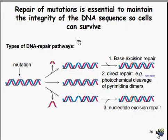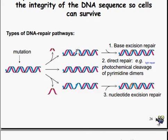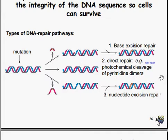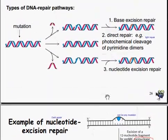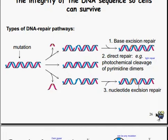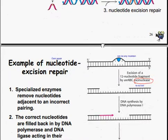The repair of these mutations is essential to maintain the integrity of DNA sequences so cells can survive. The types of DNA repair pathways are: base excision, which removes the incorrect base causing the issue; direct repair (or light repair), which is photochemical cleavage of a pyrimidine dimer — it simply pulls the mutation right out; and nucleotide excision repair, which pulls off the whole nucleotide and swaps it with another one. Nucleotide excision repair is also known as dark repair.